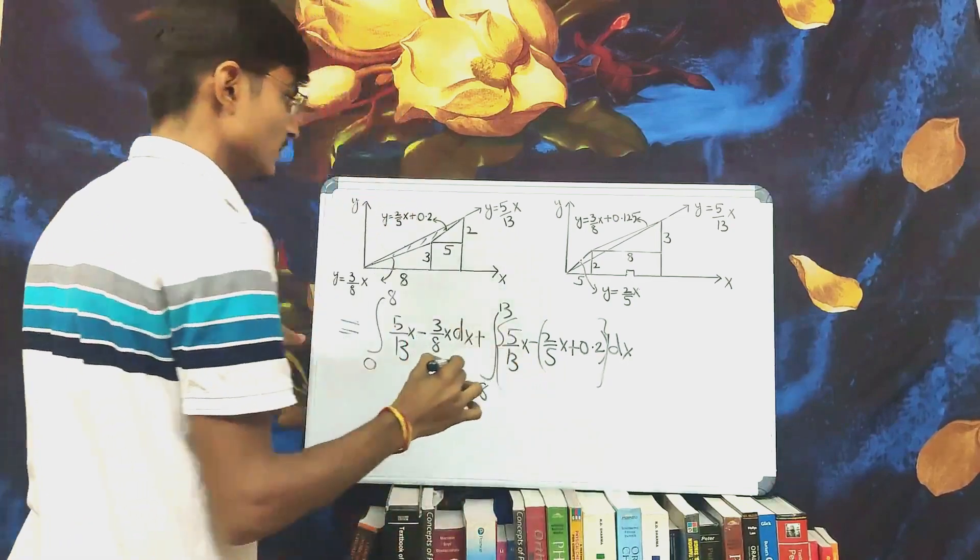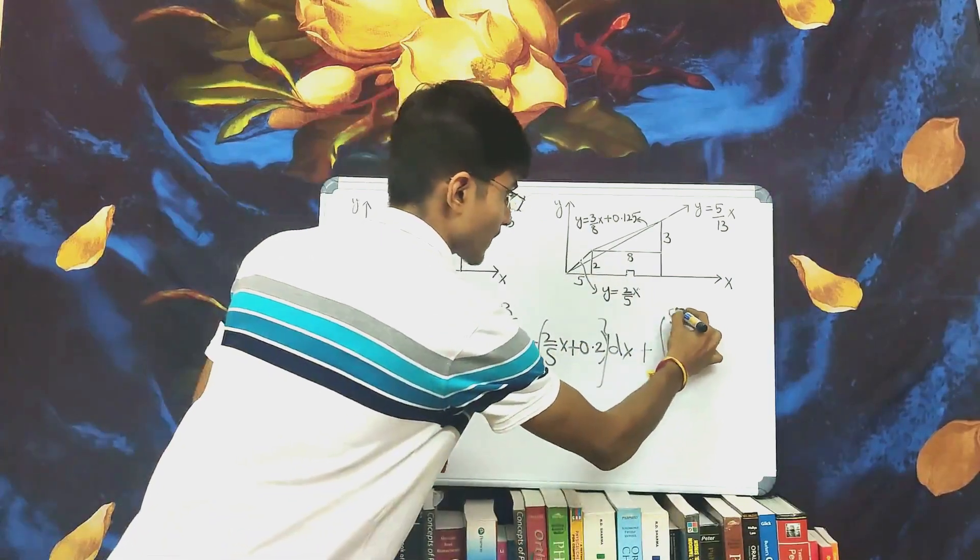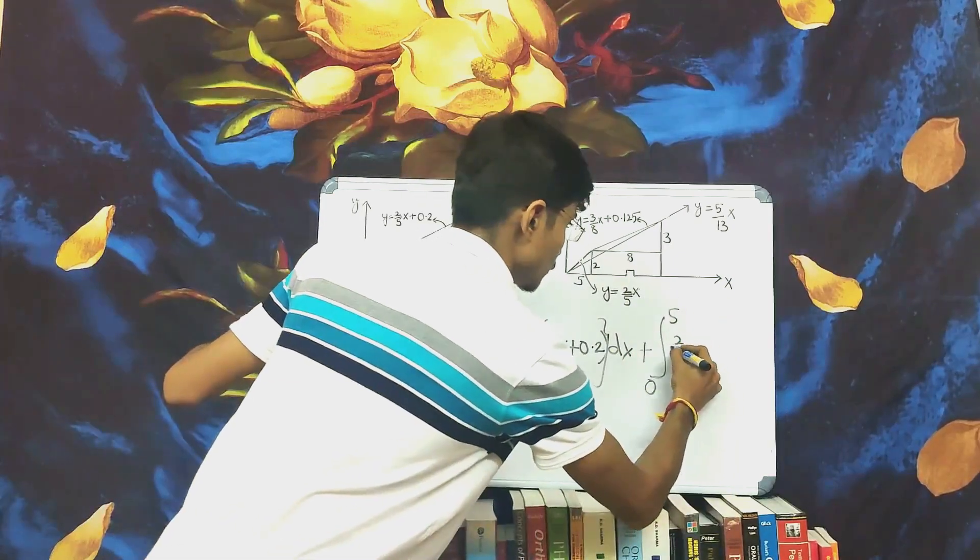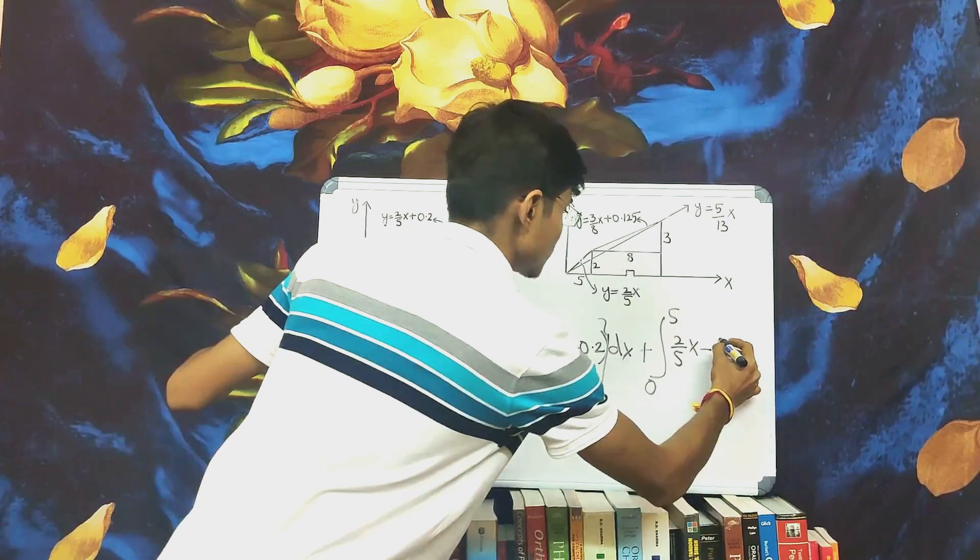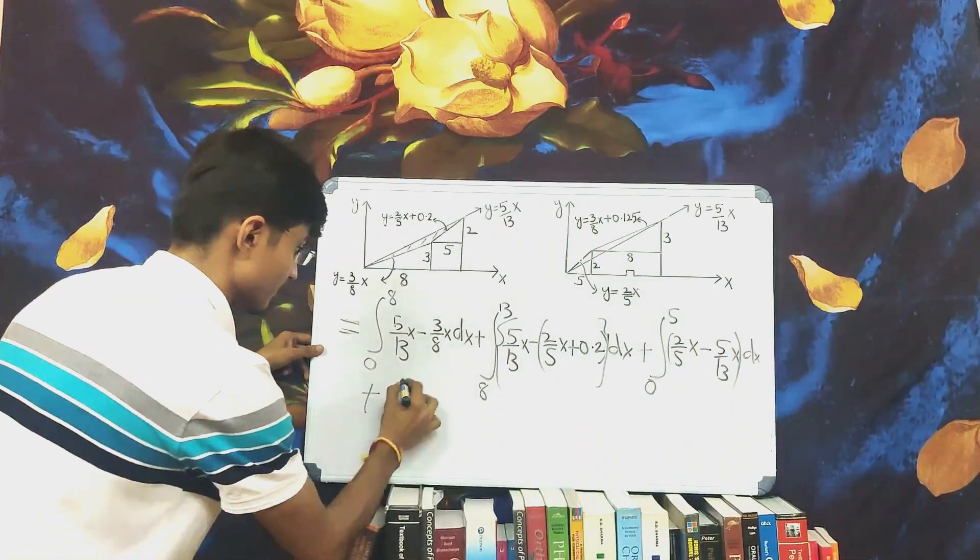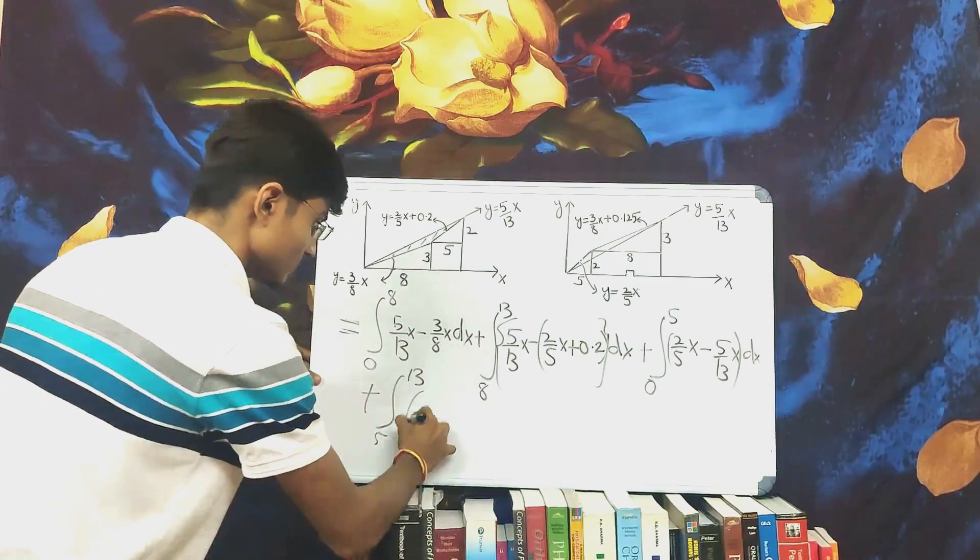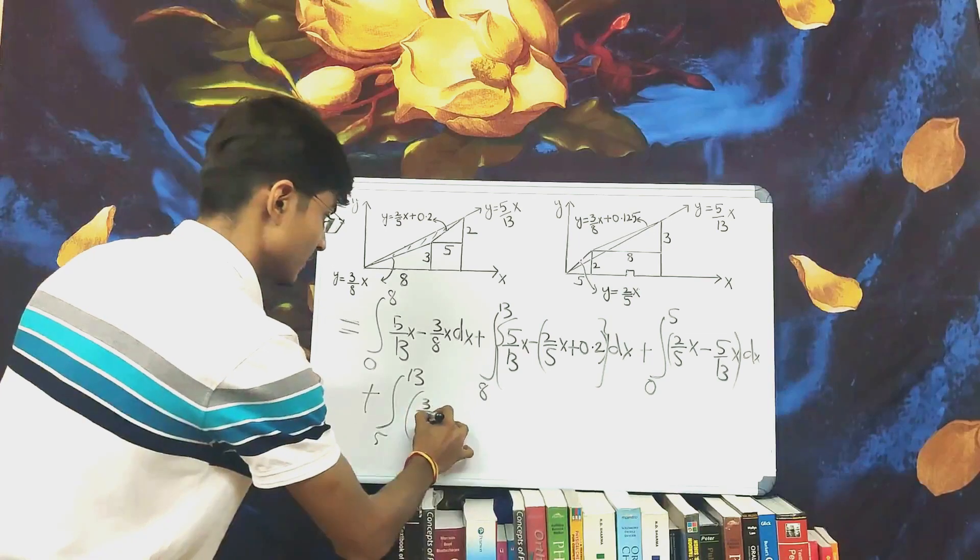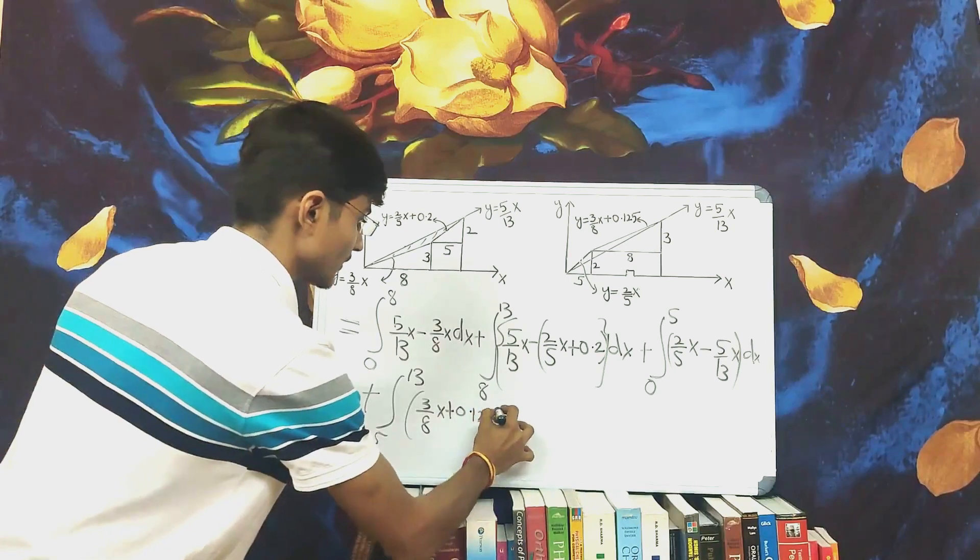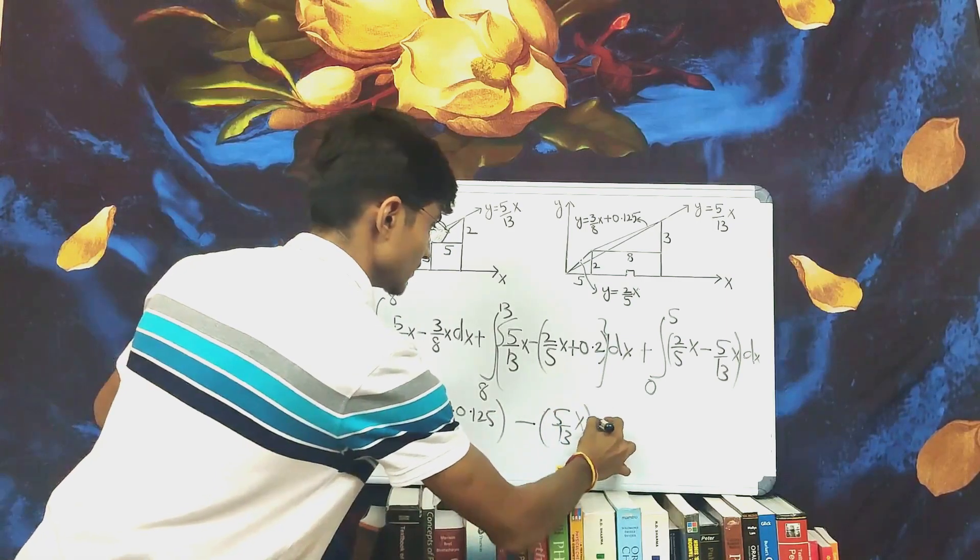And the term from x equal to 8. The term from that will be limits 0 to 5. And here we will start with 2 by 5x minus 5 by 13x dx plus limit from 5 to 13, 3 by 8x plus 0.125 minus 5 by 13x dx.